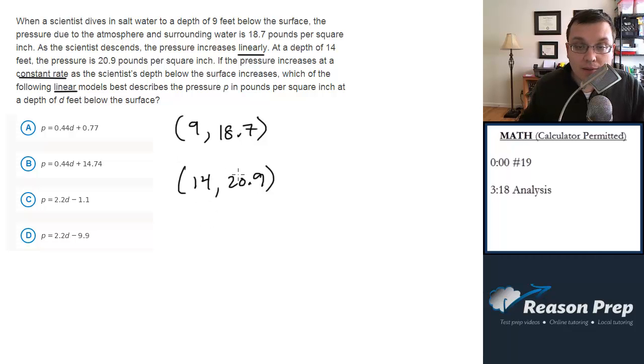The slope m is the change in y and the change in x, which in this case is the change in p over the change in d, since p is the y and d is the x in this case.